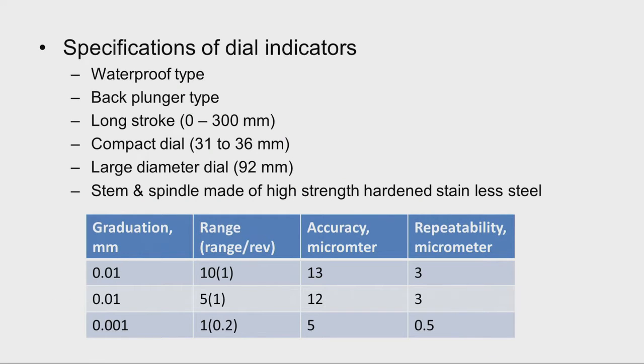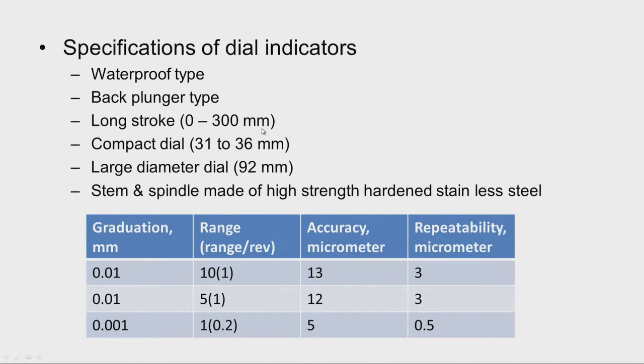What are the specifications of dial indicators? They are available for normal working conditions as well as coolant splash environments — waterproof types are also available. Back plunger types are also available for cases where the plunger must be at the back. Long stroke dial indicators are available with ranges up to 0 to 300 millimeter. Compact dial sizes of 31 to 36 mm are available where space is limited, and large diameter dials of 92 mm are available for easy reading.